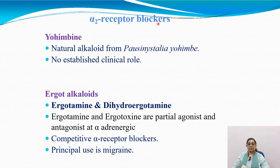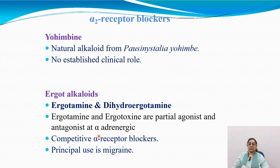Alpha-2 receptor blocker: yohimbine is a specific alpha-2 receptor blocker, but there is no established clinical role. Ergot alkaloids — ergotamine and dihydroergotamine — are partial agonists and antagonists at the alpha-adrenergic receptor and competitive alpha receptor blockers, with their principal use in migraine.